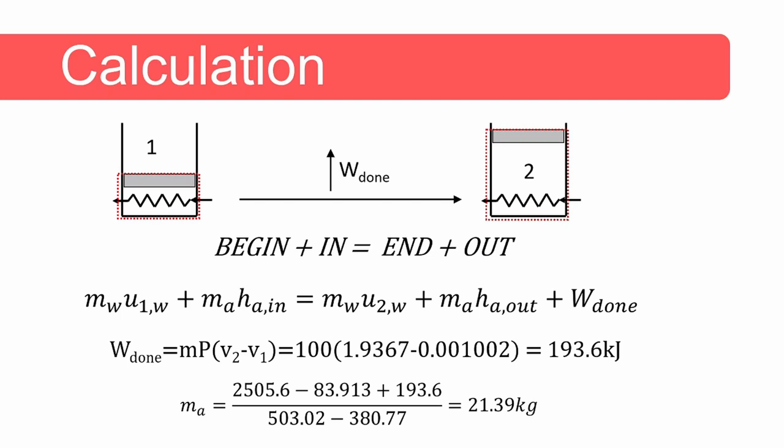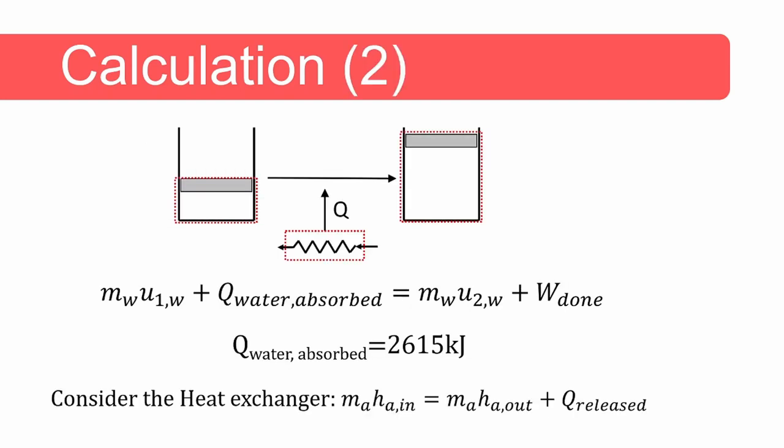We also need to determine the boundary work. Reading specific volumes of water and superheated steam from the tables and solving, the amount of air comes to 21.39 kilograms. We can also approach this problem differently by drawing the system boundaries differently — different equations result, but the amount of air remains the same.